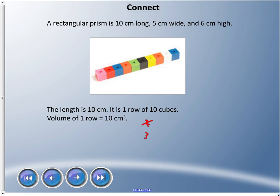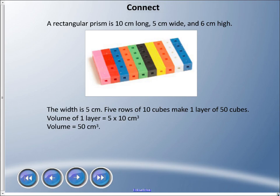Now still building that prism here, we have the bottom layer and we have a width of 5 centimeters. So I have 5 rows of those 10 cubes I had in the previous picture, and they make one layer of 50 cubes.